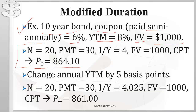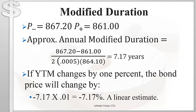To compute the approximate annual modified duration, we change the annual yield by 5 basis points. We plug the numbers into our financial calculator in six-month periods — specifically, we increase the yield by only 2.5 basis points since the annual change is 5 basis points. We get P-plus as $861. Similarly, we compute P-minus as $867.20. Using the formula, the approximate annual modified duration works out to 7.17 years.